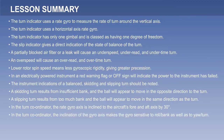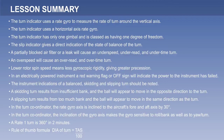In the turn coordinator, the inclination of the gyro axis makes the gyro sensitive to roll or bank as well as to yaw or turn. A rate one turn is 360 degrees in 2 minutes. A rule of thumb formula to calculate the diameter of a turn flown at rate one is TAS divided by 100. A rule of thumb formula to calculate the required angle of bank for a rate one turn at a given true airspeed is TAS divided by 10, plus 7.